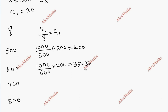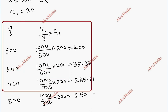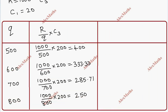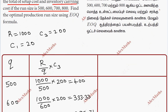You get a value of 285.71, and the last value: 1000 divided by 800 into 200 gives you 250. Now moving to inventory carrying cost.